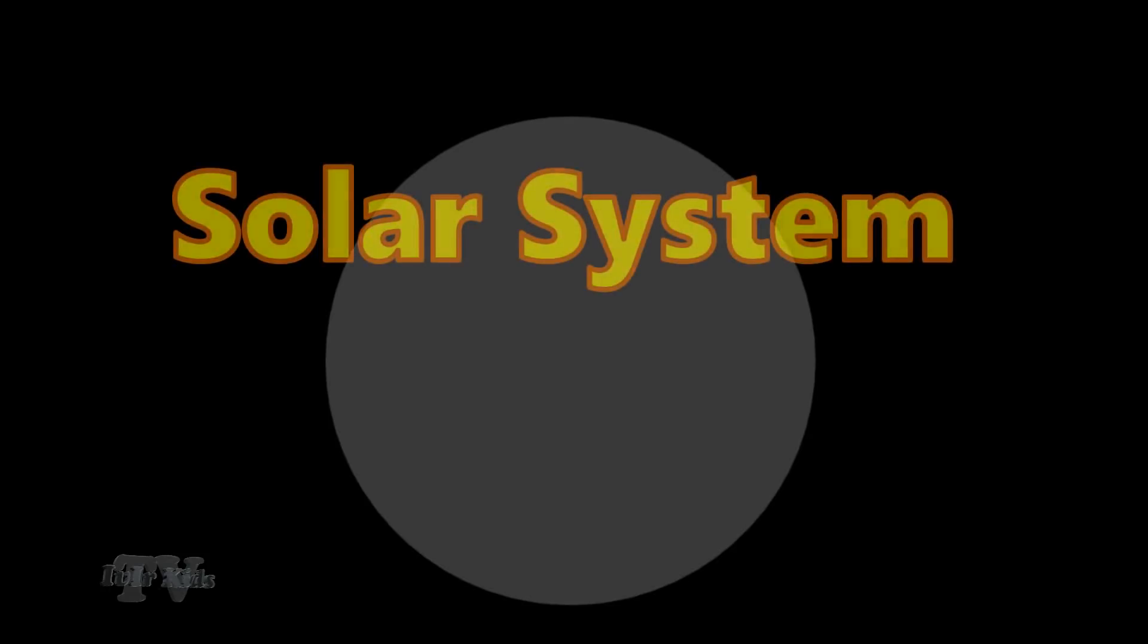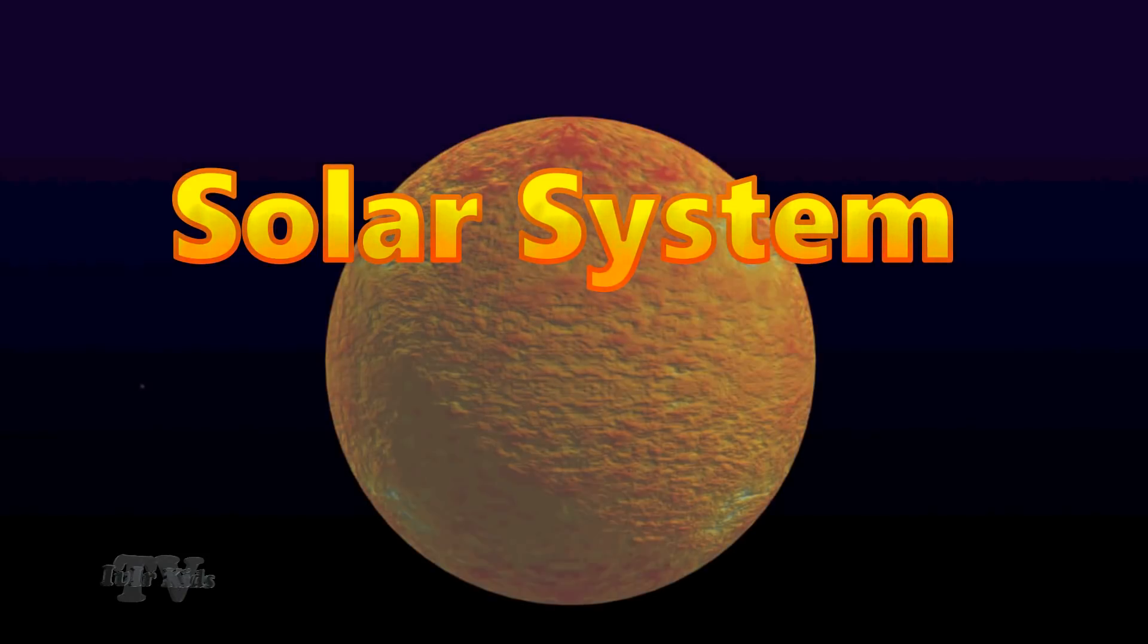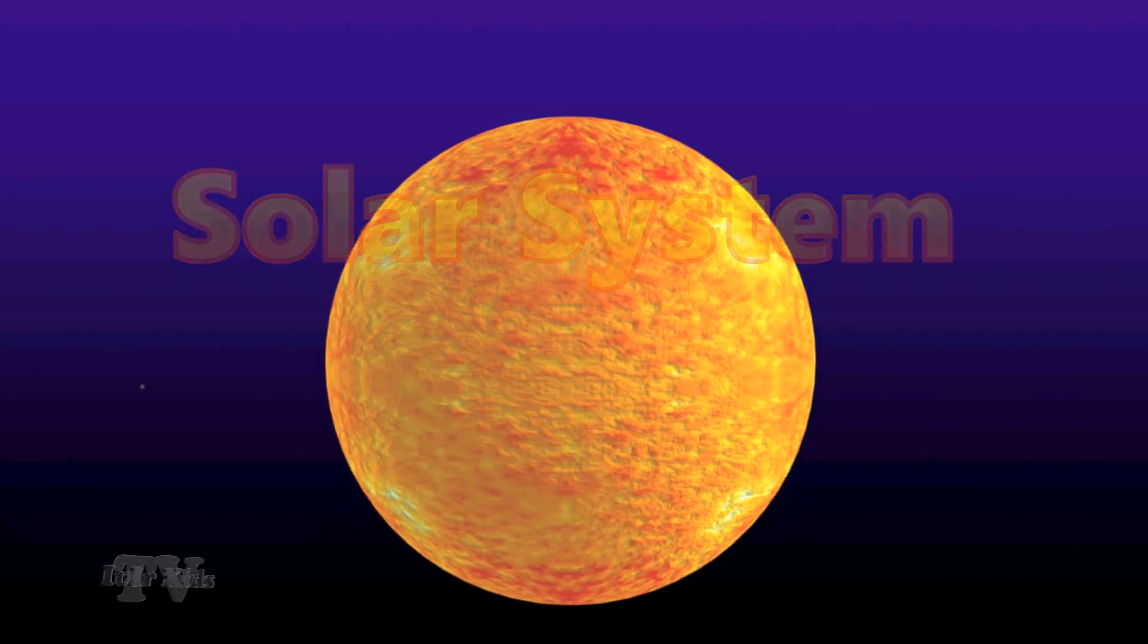The solar system is a grain of sand in the vast ocean of space. But for us it is huge. Let's try to imagine its gigantic dimensions.